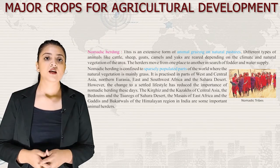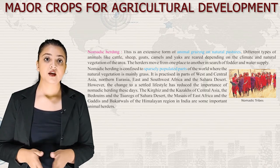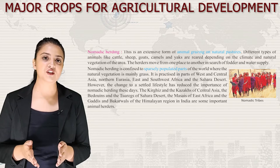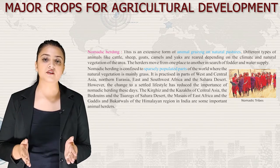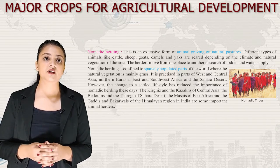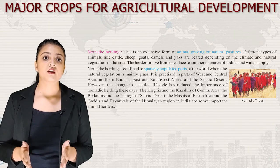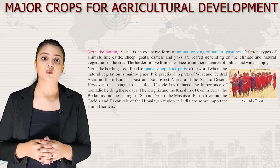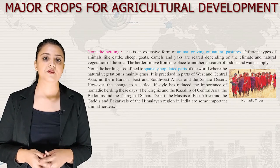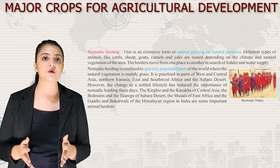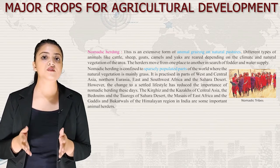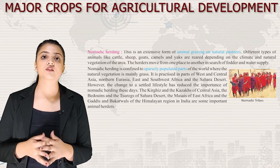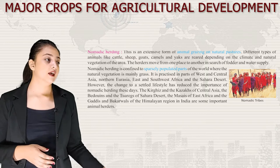Next is nomadic herding, an extensive form of animal grazing on natural pastures. Animals like cattle, sheep, goats, camels and yaks are reared depending on climate and natural vegetation. Herders move from place to place in search of fodder and water. It is practiced in parts of West and Central Asia, Northern Eurasia, East and Southwest Africa and the Sahara Desert. The Kirghiz and Kazakhs of Central Asia, Bedouins of the Sahara, the Maasai of East Africa and Gaddis and Bakarwals of the Himalayas are important animal herders.